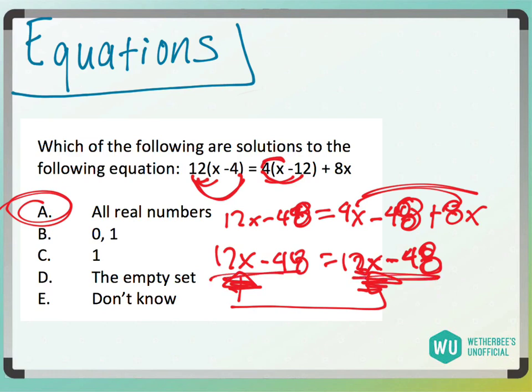because it's the exact same equation. If it was even remotely different, 12x minus 47 equals 12x minus 48, it would be like this empty set. You're not going to get 12x minus 47 to be equal to 12x minus 48. But they're equivalent to one another, so it's all real numbers.